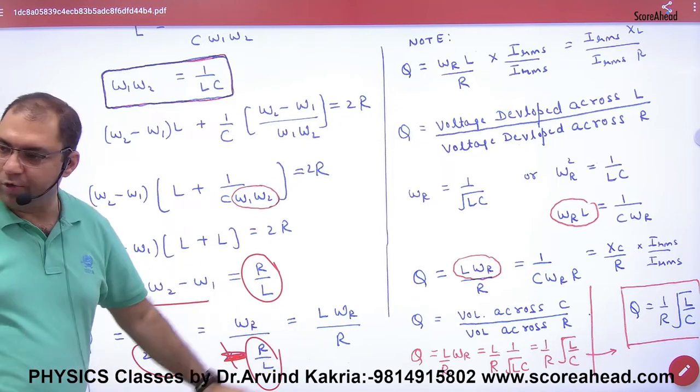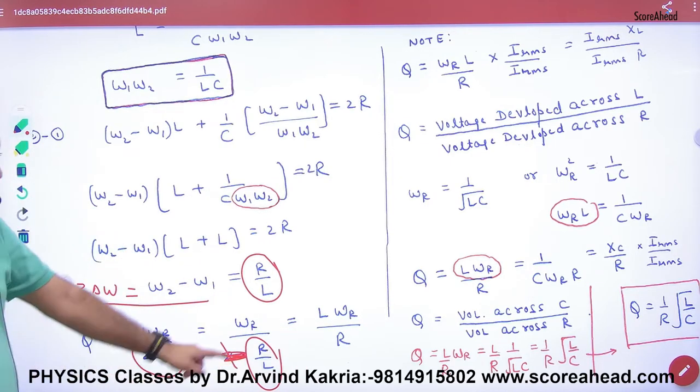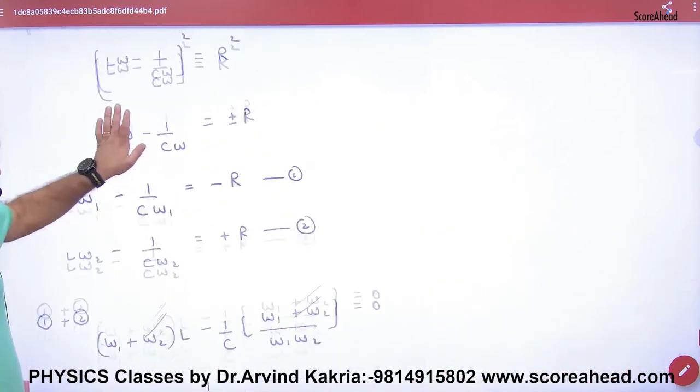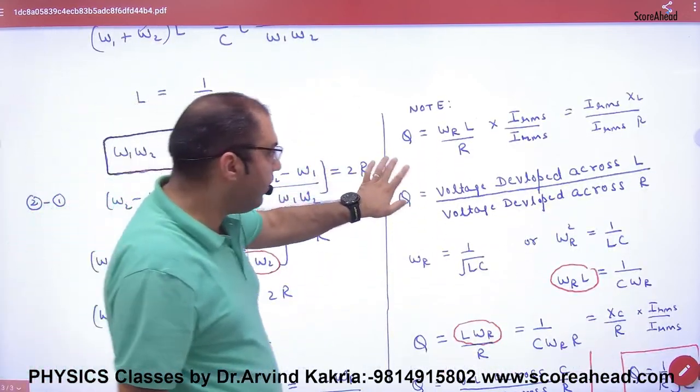So this is what happened - Q-value. So what happened? L into omega R by R. Clear here? Okay. In this, Q-value is equal to... Let's do a job.